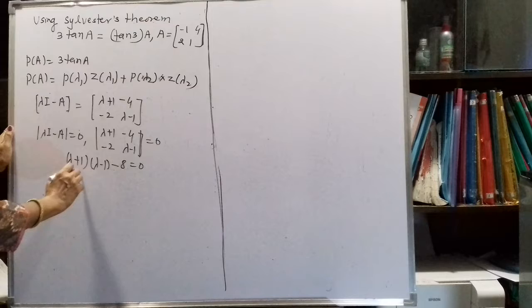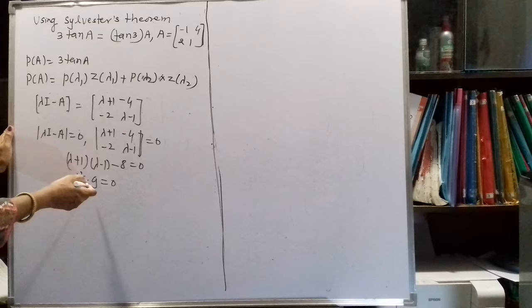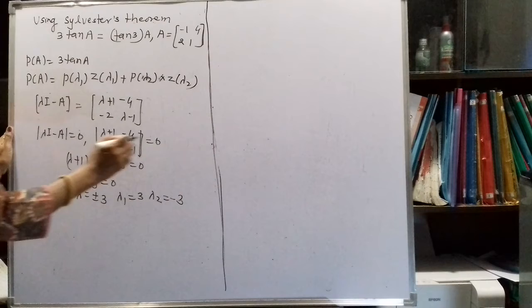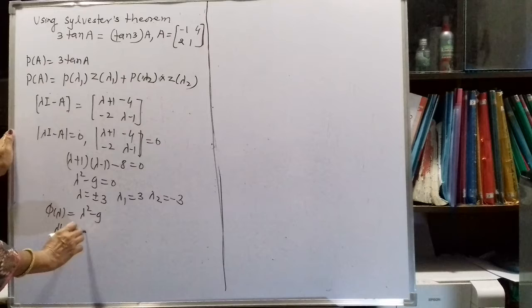Expanding the determinant: (λ+1)(λ−1) − 8 = 0, which gives λ² − 1 − 8 = λ² − 9 = 0. This factors as λ² − 3² = 0, so λ₁ = 3 and λ₂ = −3. The characteristic polynomial is φ(λ) = λ² − 9, and φ′(λ) = 2λ.